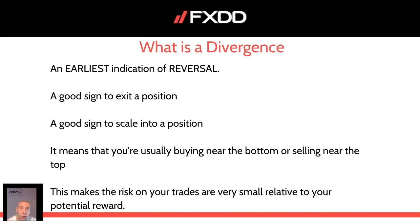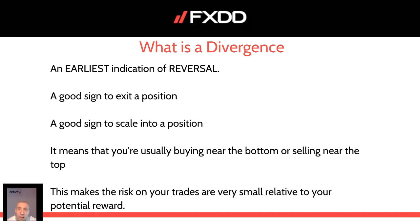We will try to spot the divergence in real time on a live chart. Divergence also means that you will usually be buying near the bottom or selling near the top. By doing so, you're actually following smart money — you join before it's too late. There are many systems that tell you to buy or sell when the market has already moved in a single direction. If you use divergence, you will usually avoid buying or selling a currency pair when it's too late, joining that first most important ride. That will make your risk on trades very small relative to your potential reward.